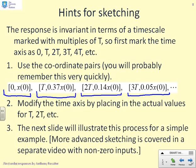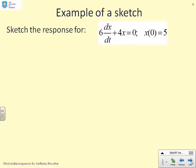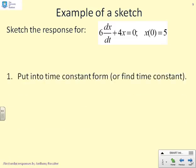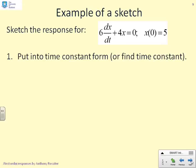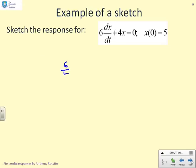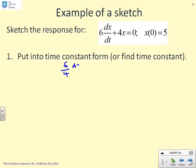So here we go. We've got a system: 6 dx/dt + 4x = 0, x(0) = 5. How do we go about solving this? Well, step one, put into time constant form. That's what we said was the first thing to do. I'm going to end up with (6/4) dx/dt + x = 0, and that tells me that T = 1.5.